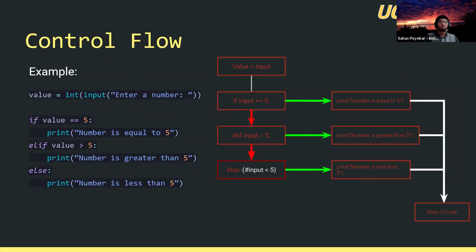Here we have a simple control flow that takes an input from the user. The first if statement checks if the value equals 5 — if so, we print 'number is equal to 5'. Elif checks if the value is greater than 5, printing 'number is greater than 5'. The else assumes if it's not equal to or greater than 5, then it's less than 5, printing 'number is less than 5'. The control flow diagram shows: get the value, compare to 5 — if true, print and move on; if false, check elif, keep checking until a true statement is found.